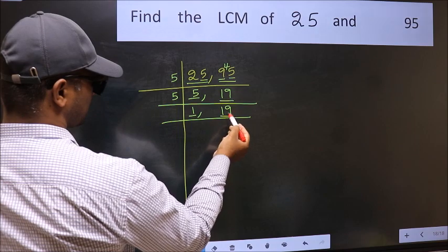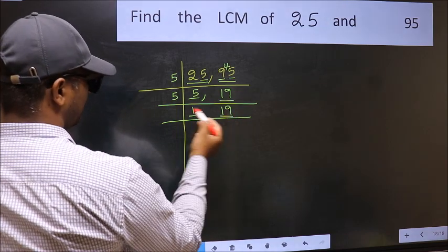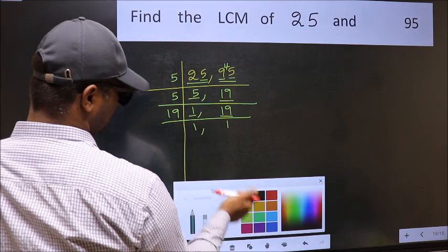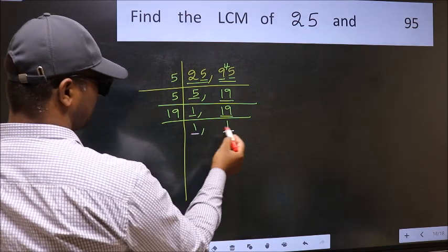So focus on the next number 19. 19 is a prime number, so 19 times 1 is 19. So we got 1 in both places.